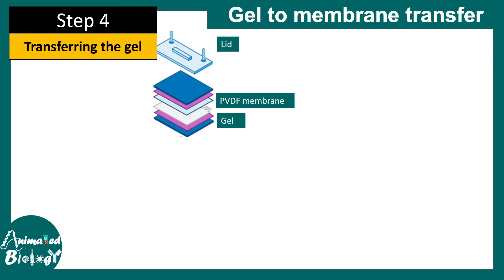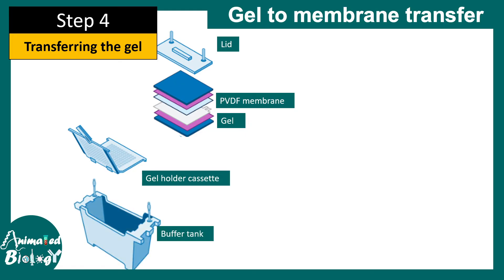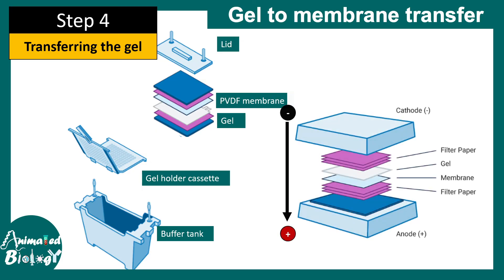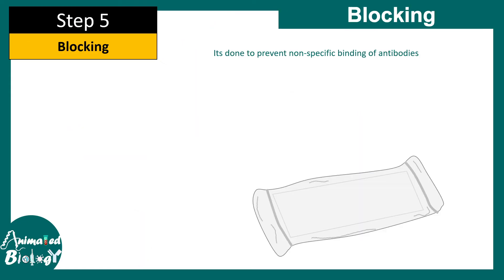A PVDF membrane is placed on top of the gel and then sandwiched between layers of paper towels and placed into a gel holder cassette. This cassette is embedded in a buffer tank containing transfer buffer. The transfer happens under the influence of an electrical field. The proteins in the SDS gel are negatively charged because they are coated with SDS, so they move toward the positive electrode — from cathode to anode. Eventually all the contents of the gel are transferred onto the PVDF membrane.